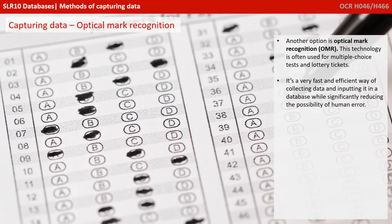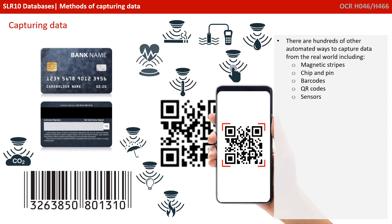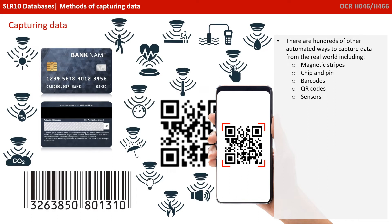Another option is Optical Mark Recognition, or OMR. This technology is often used for multiple choice tests and lottery tickets. It is a very fast and efficient way of collecting data and inputting it into a database while significantly reducing the possibility of human error. There are hundreds of other automated ways to capture data from the real world, including magnetic strips on cards, chip and pin, barcodes, QR codes, sensors, and many more.